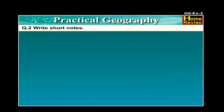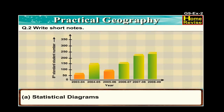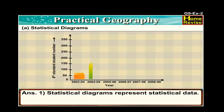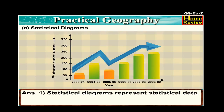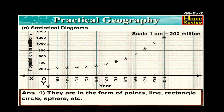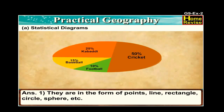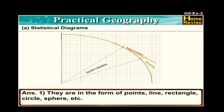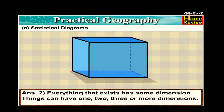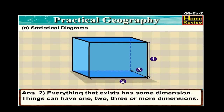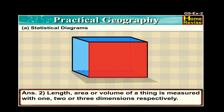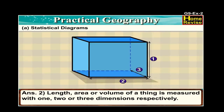Question number two: write short notes. Part a: statistical diagrams. Statistical diagrams represent statistical data. They are in the form of points, line, rectangle, circle, sphere, etc. Everything that exists has some dimension; things can have one, two, three or more dimensions. Length, area, or volume of a thing is measured with one, two, or three dimensions respectively.